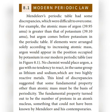For example, the atomic mass of argon is 39.95 atomic mass units, which is greater than that of potassium, whose atomic mass is 39.10 atomic mass units. But argon comes before potassium in the periodic table. If elements were arranged according to increasing atomic mass, argon would appear in the position occupied by potassium in our modern periodic table.